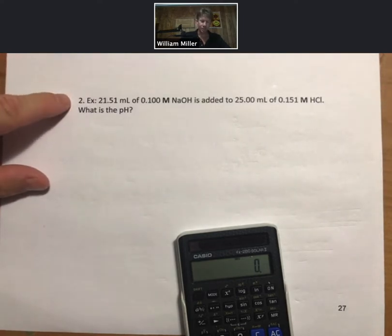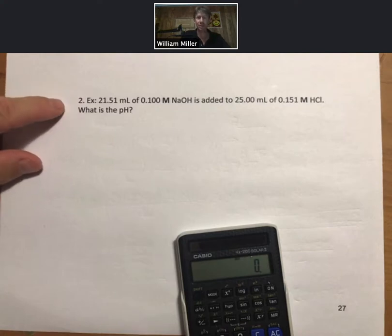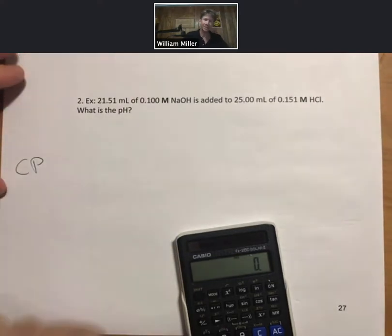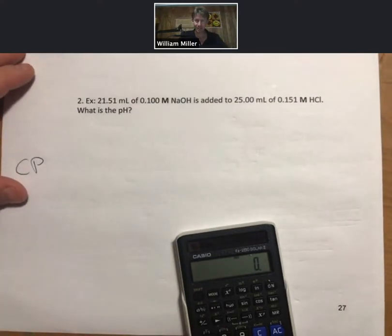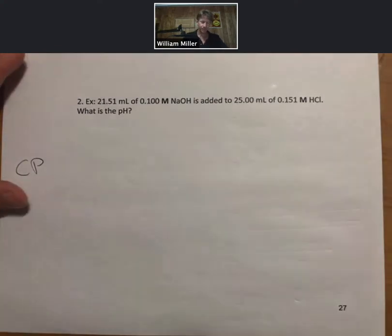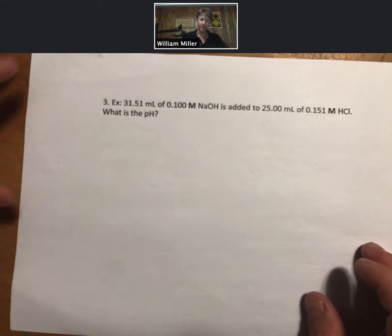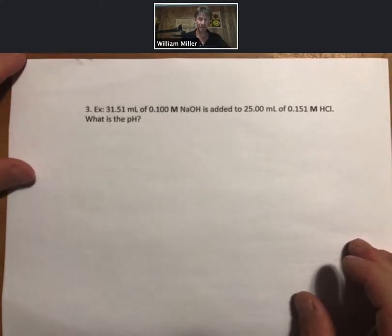We just did a problem just like this. I will tell you that sodium hydroxide is the limiting reactant and therefore it will be an acidic solution just like the last example. So therefore this is a companion problem. The next one is a companion problem as well, pH less than seven, acidic.